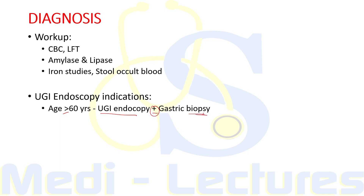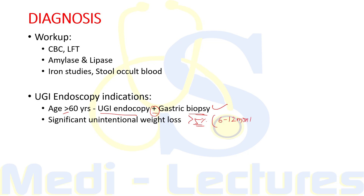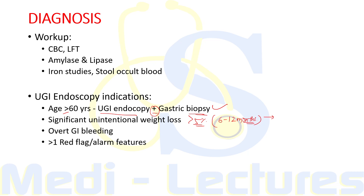Upper GI endoscopy is performed with or without gastric biopsy if the gastroenterologist has suspicion of any lesion. Other indications include significant unintentional weight loss — more than 5% of body weight within 6 to 12 months — overt GI bleeding, more than one red flag or alarming feature, or any rapidly progressive alarming feature. These are all indications for upper GI endoscopy, and we will refer the patient to a gastroenterologist.